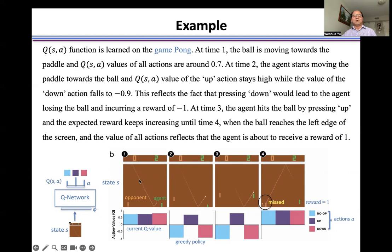For example, at step one, we have this input image, that's the state S, and here is two scores. Here is the agent here, here is the opponent.